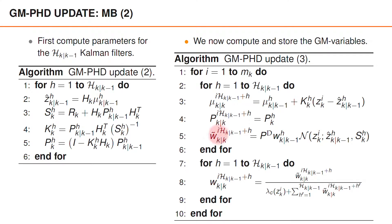Finally, obtaining the weights is a bit more complicated, and we first compute a temporary variable, w tilde, which is pd times w h times the predicted likelihood of z k i, assuming the predicted distribution number h.